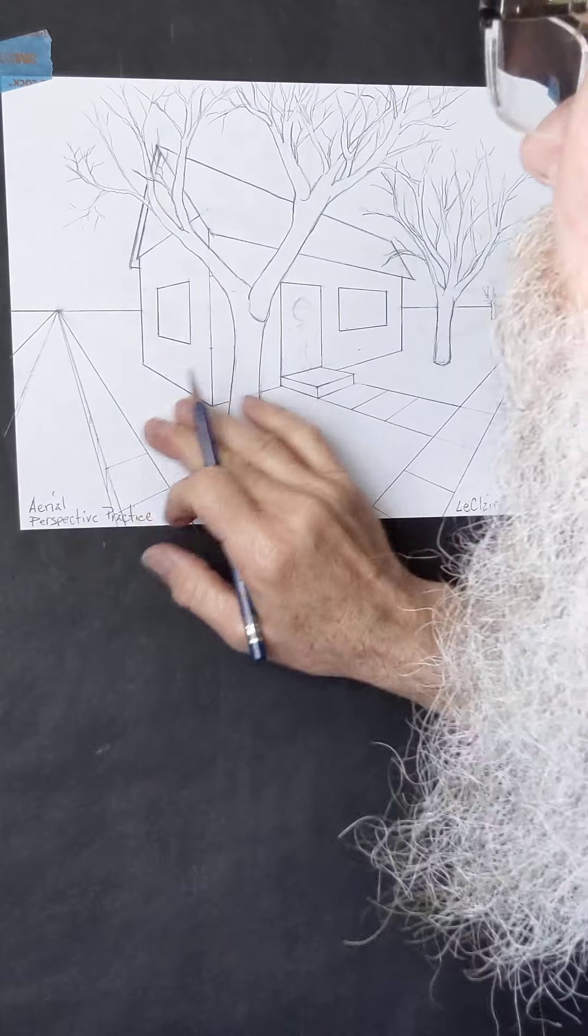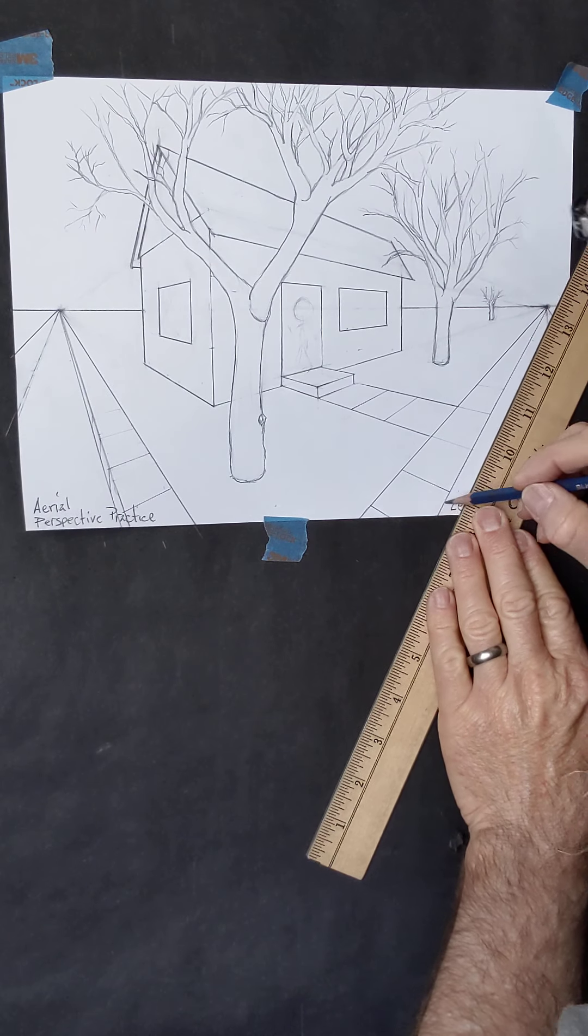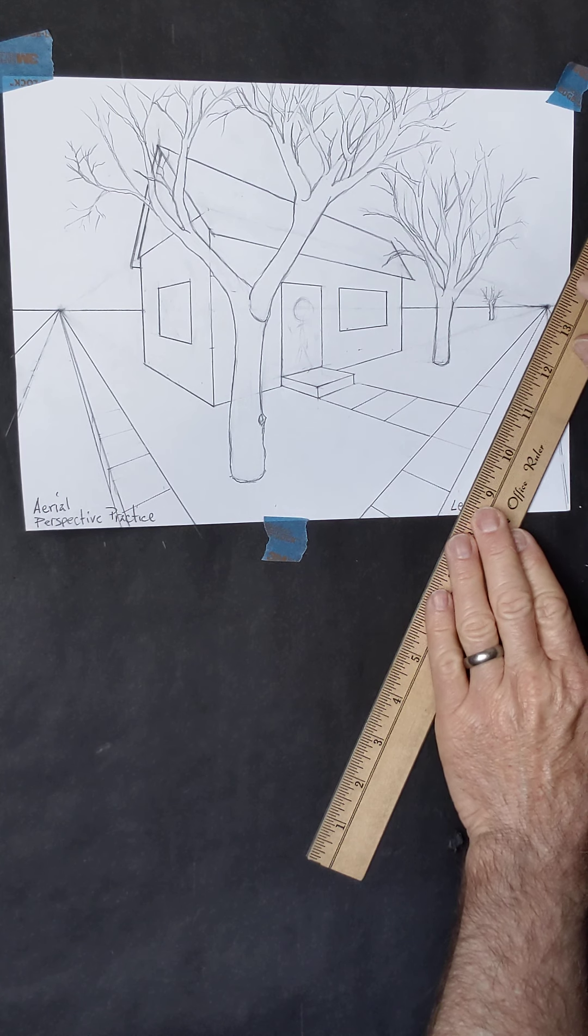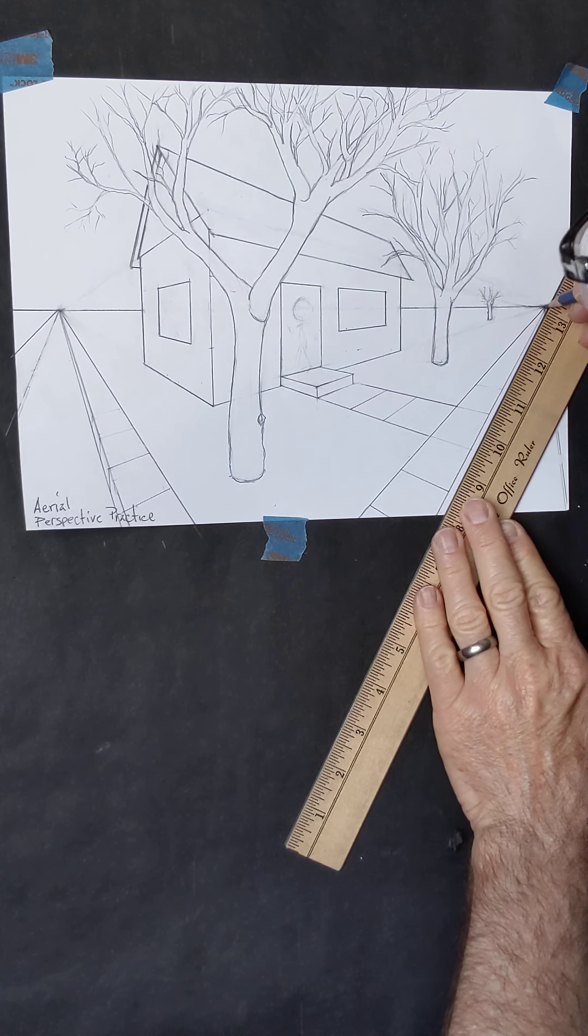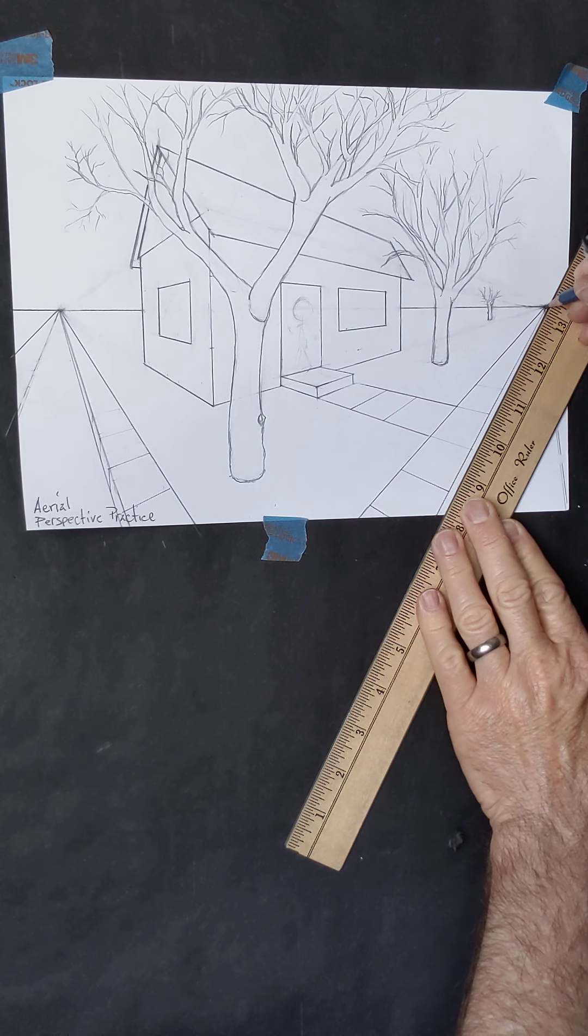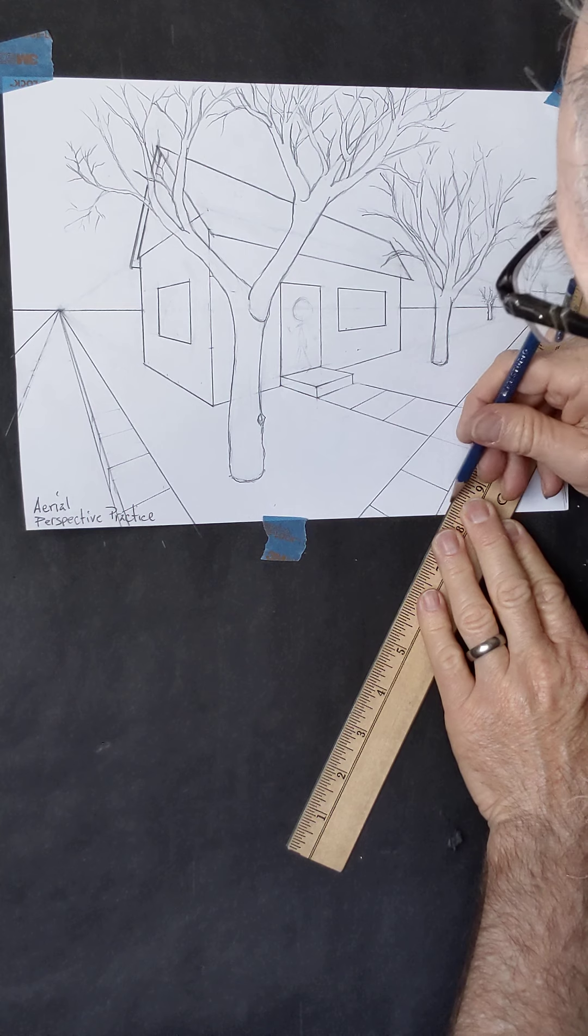We can do the same thing on this side. So I've got this line and this line for the sidewalk. I put my pencil right on the same vanishing point, about the same distance away from this line as I have it from that line at this end, and I just draw a little bit more.